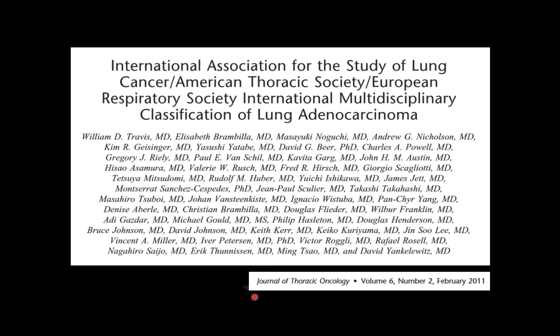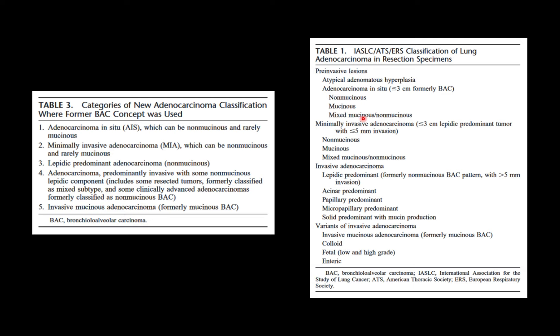An important article from the Journal of Thoracic Oncology in 2011 reclassified lung adenocarcinomas. Prior to this, the term bronchoalveolar carcinoma was used for multiple entities, including adenocarcinoma in situ, minimally invasive adenocarcinoma, and lipidic predominant adenocarcinoma. For this talk, the key entities are: atypical adenomatous hyperplasia (a precancerous condition), adenocarcinoma in situ (cancer but pre-invasive), minimally invasive adenocarcinoma, and lipidic predominant invasive adenocarcinoma — these are the tumors likely to appear subsolid on imaging.